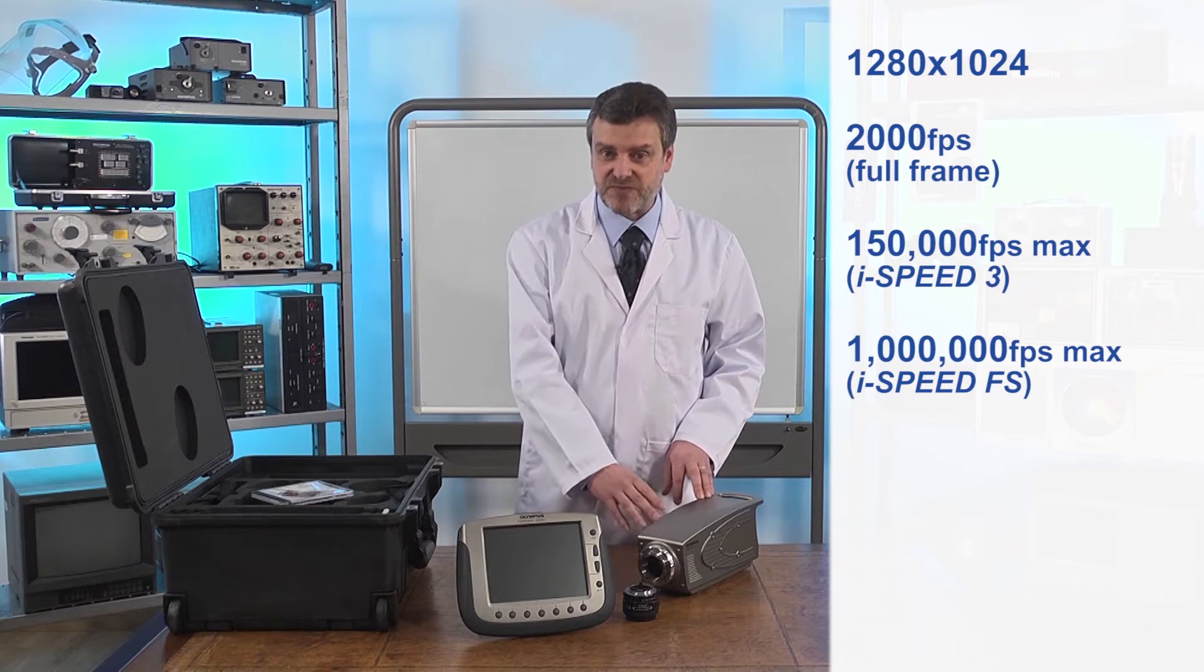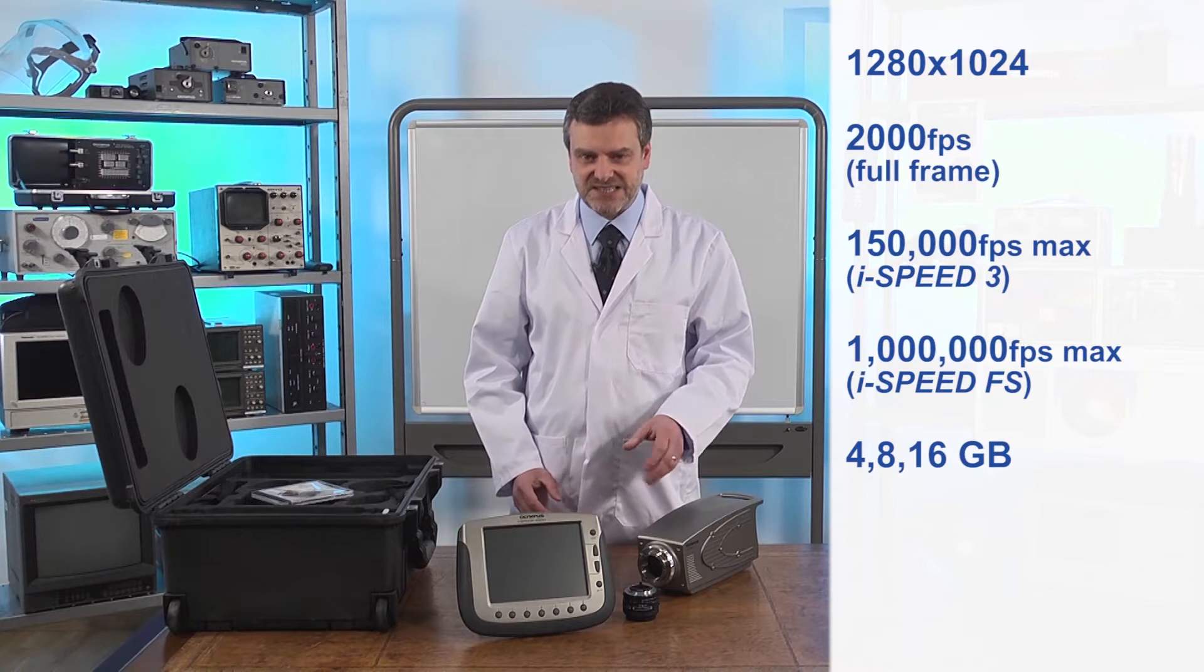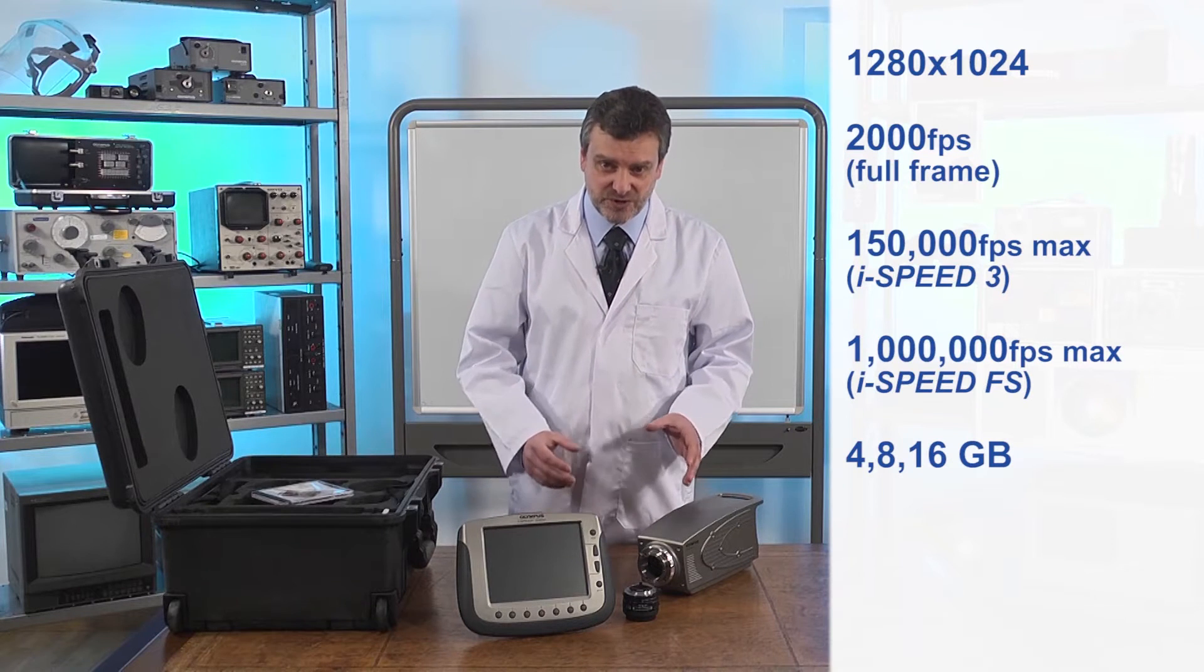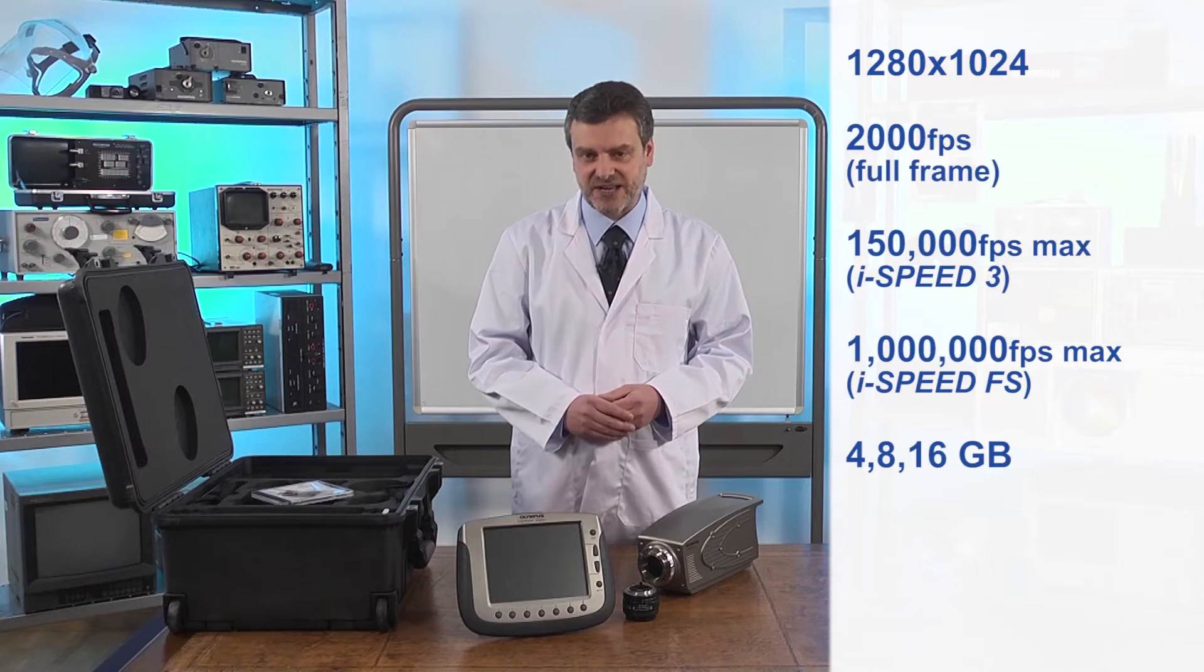The camera comes with three sizes of memory: 4, 8 and 16 gigabytes which means you can record up to five seconds of high speed video in your camera.